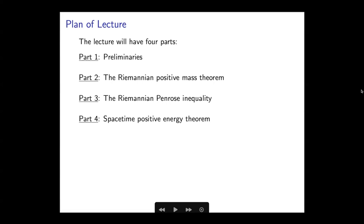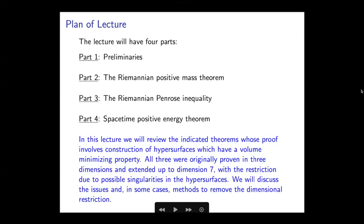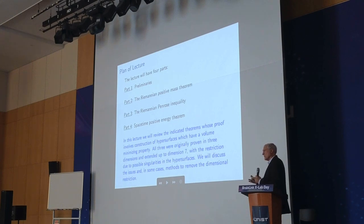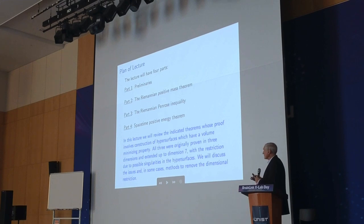I'm going to talk about really three different theorems and give just a general idea of the proof of those and some of the issues that come up in higher dimensions. The first one is the Riemannian Positive Mass Theorem, the second one is the Riemannian Penrose Inequality, and the third one is the spacetime positive energy theorem. In each of the theorems they were originally done in three dimensions and then extended up to dimension seven. There's a restriction to dimension seven arising from the fact that constructions involving volume minimizing hypersurfaces have possible singularities in higher dimensions, and those singularities limit the possibility of doing the arguments in higher dimensions. I also want to discuss methods that can be used to remove the dimensional restriction.